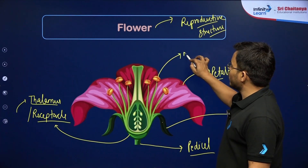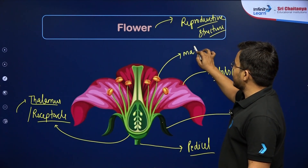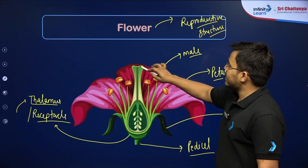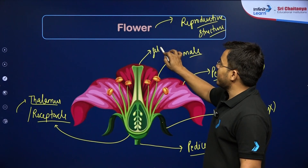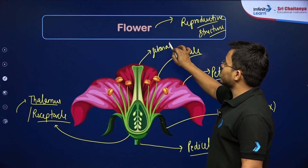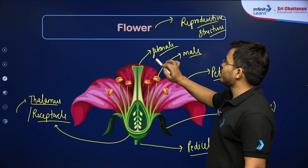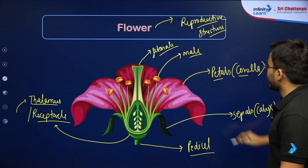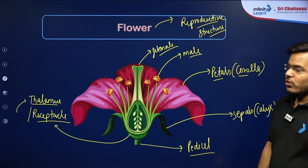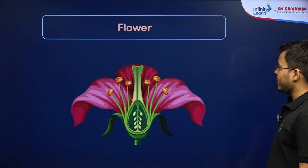After the petals, there is the male part of the flower, which we call the androecium, and the female part, which we call the gynoecium. Let's discuss these two parts in more detail.